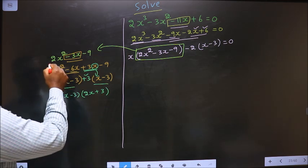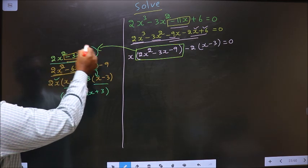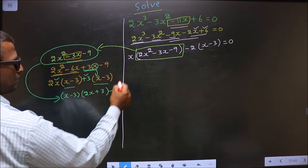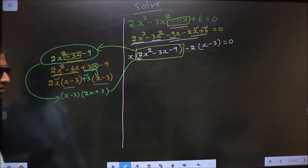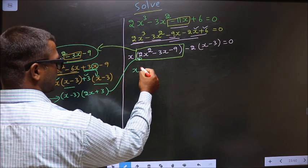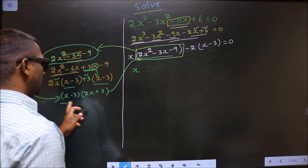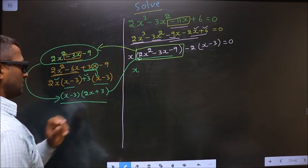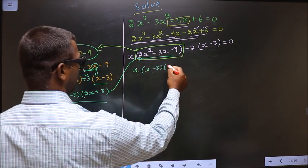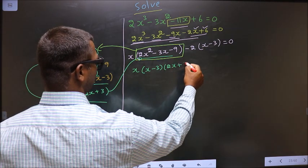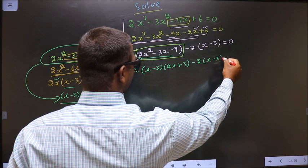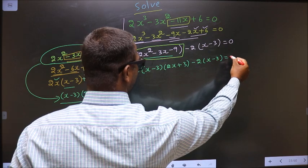Now in place of this quadratic I will replace it back. So x times, in place of this quadratic now you write: x minus 3 times 2x plus 3, minus 2 times x minus 3, equal to 0.